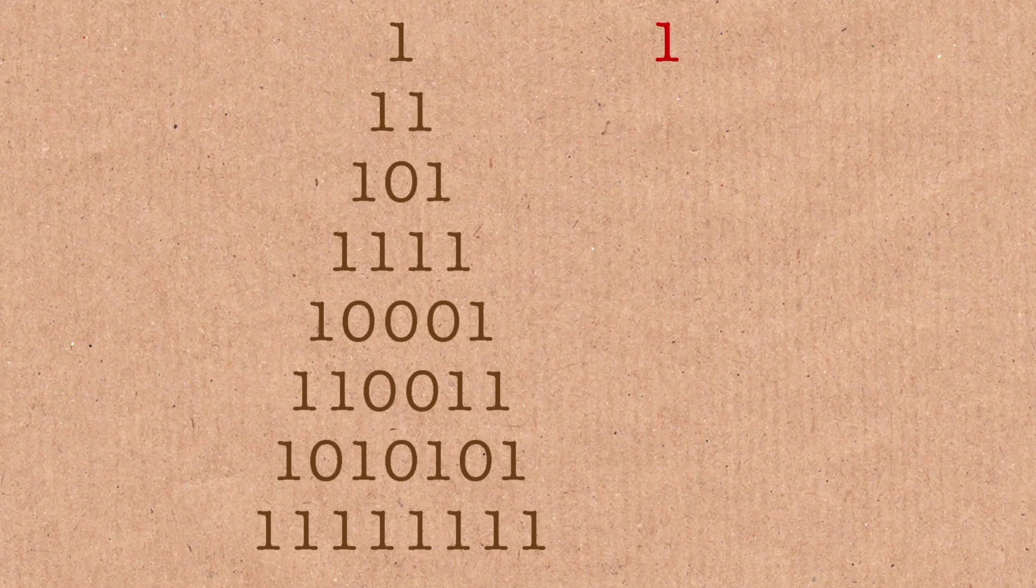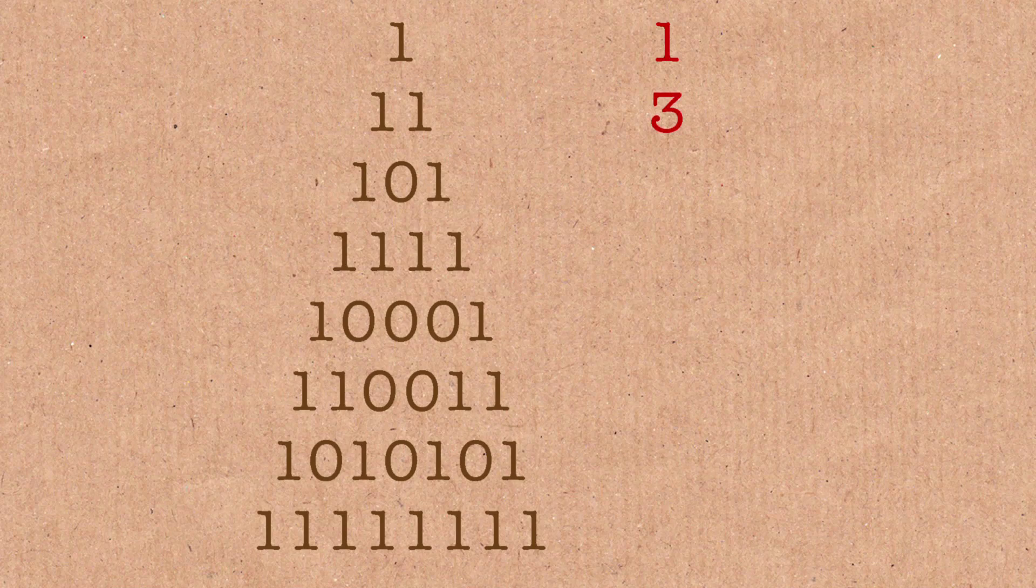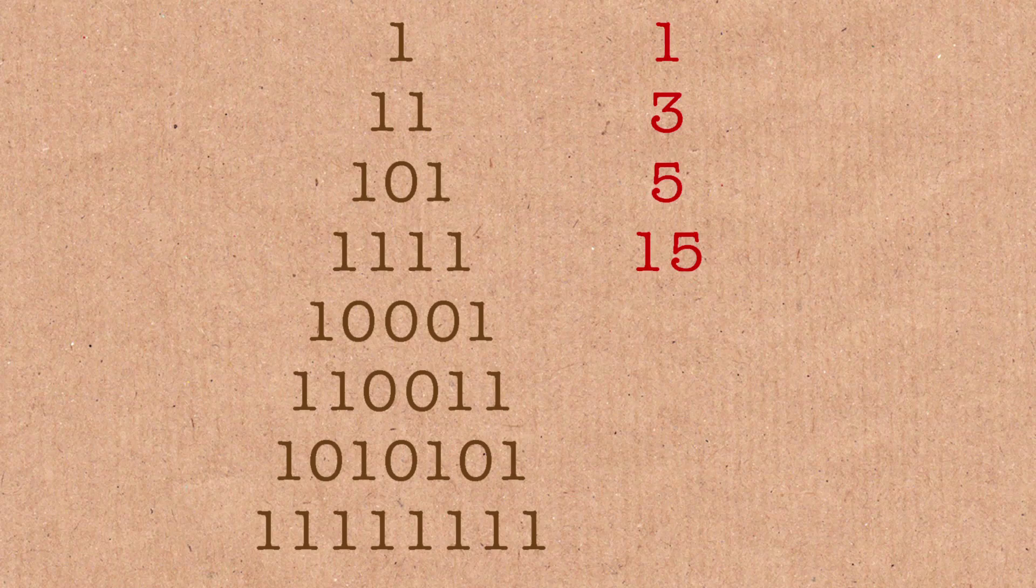You know one in binary is one, and then one-one in binary is three, one-zero-one is five, one-one-one is fifteen, and then the next one, one-zero-zero-zero-one is seventeen. Now these may not immediately appear pretty cool, but if I kept going the next one is fifty-one, the next one is eighty-five, after that is two fifty-five.